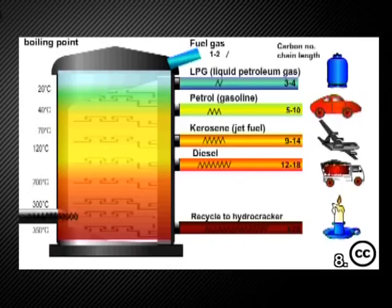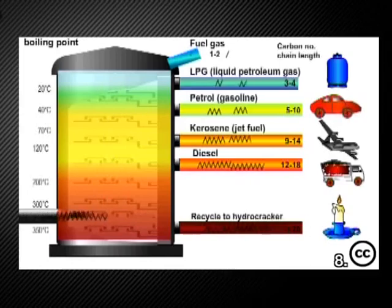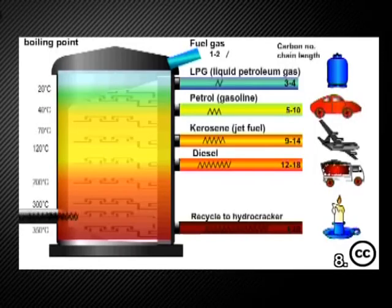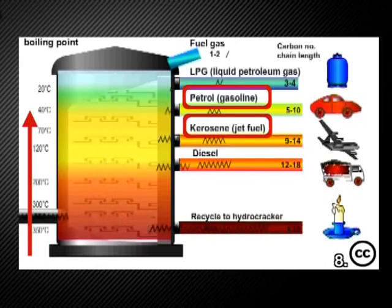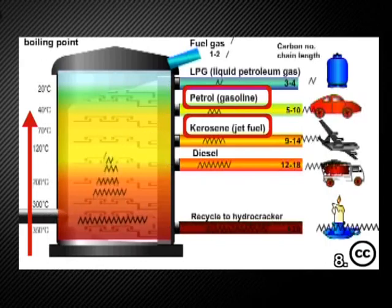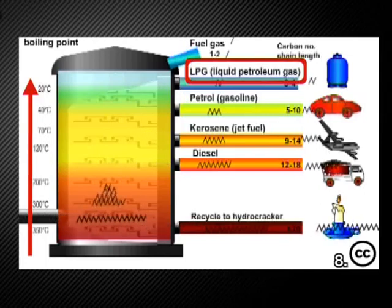The hot gases cool as they move up the building or fractionating column. Each layer in the building cools down the gases to a lower temperature. As a result, at each layer, the temperature will become low enough for some of the compounds in the mixture to condense. Here we see that as temperature decreases, the compounds that have the same boiling points turn into liquids at the same place. In this way, they are separated from each other. The rest that have lower boiling points continue up the fractionating column.